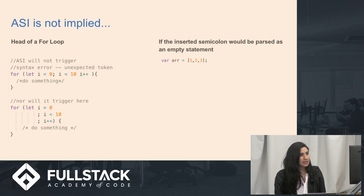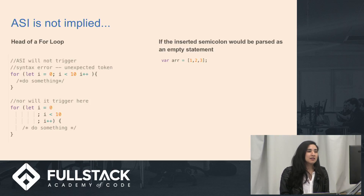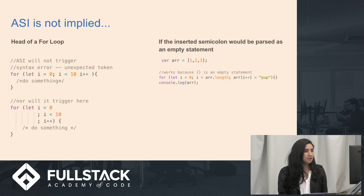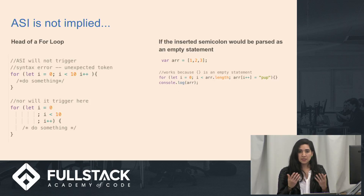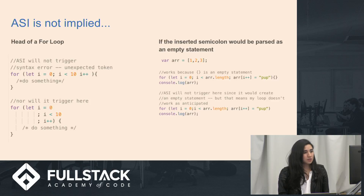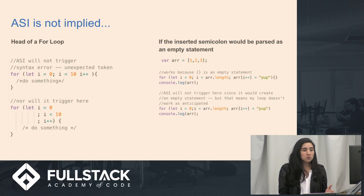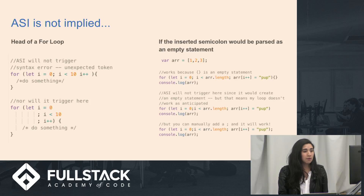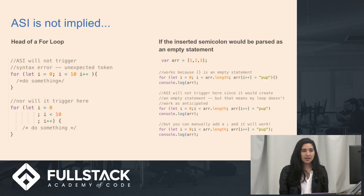Another cool trick: if the semicolon inserted would be parsed as an empty statement, it won't be inserted. This for loop is actually modifying the array above it to replace every element with the word 'pup', and it works because the empty opening and closing curly brace is an empty statement. But if you use a standalone semicolon — which is itself considered an empty statement — ASI won't interpret it there for you. However, if you add the semicolon yourself, it will work. This is a trick with for loops you may not have seen before.